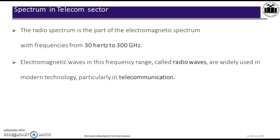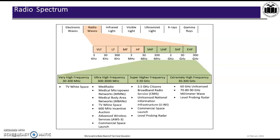The radio spectrum is the part of the electromagnetic spectrum with a frequency range of 30 hertz to 300 gigahertz. Electromagnetic waves in this frequency range are called radio waves and are widely used in modern technology, particularly in telecommunications. From the figure, you can see the radio spectrum, with a range of 3 kilohertz to 300 gigahertz, and applications starting from 30 megahertz to 300 gigahertz.